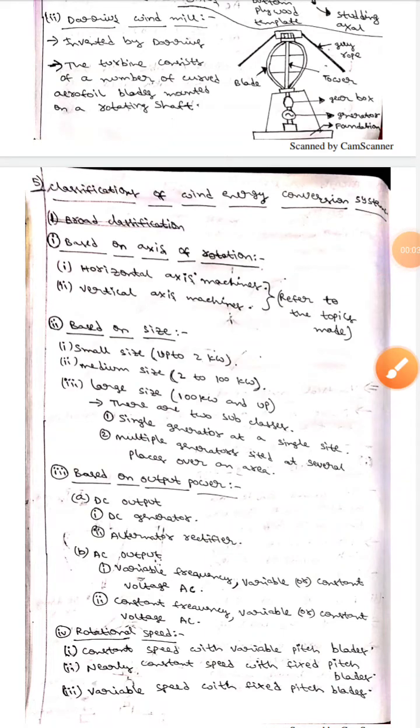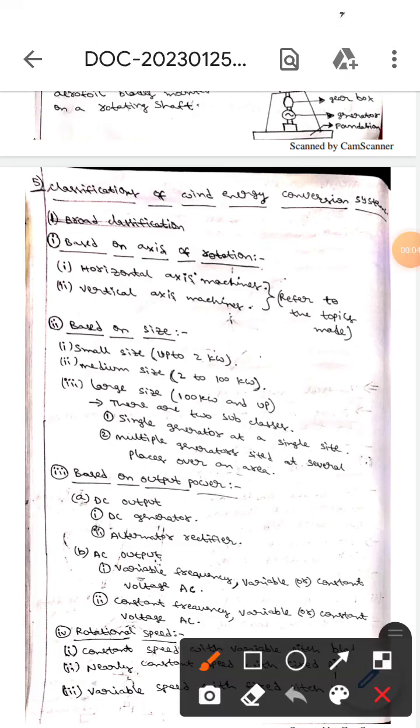Hello guys, how are you? Today we are here to discuss the classification of wind energy conversion systems. They are based on axis of rotation and classified into two types.